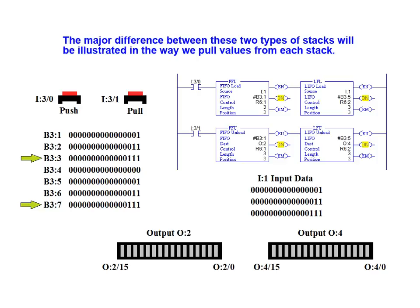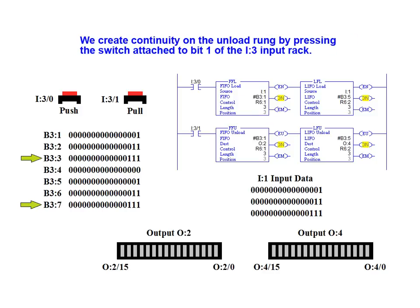The major difference between these two types of stacks will be illustrated in the way in which we pull values from each stack. We create continuity on the unload rung by pressing the switch attached to bit 1 of the I:3 input rack.